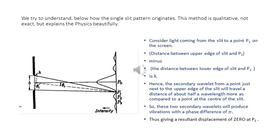Consider the light coming from a slit to a point P1 on the screen. The distance between the upper edge of the slit and P1 minus the distance between the lower edge of the slit and P1 is equal to λ, as is clear from the figure. Therefore, the secondary wavelet from a point just next to the upper edge of the slit will have to travel a distance of about half a wavelength more compared to a point at the center of the slit. So these two secondary wavelets will produce vibrations with a phase difference of π, giving a resultant displacement of zero — that is, a minima at point P1.